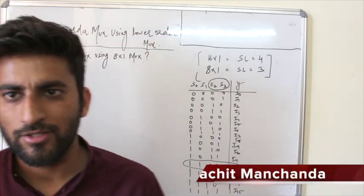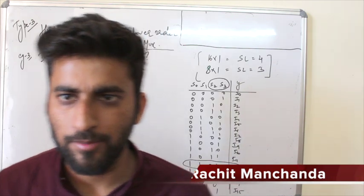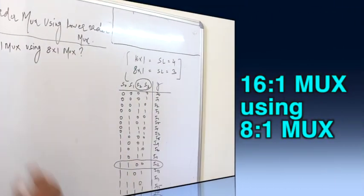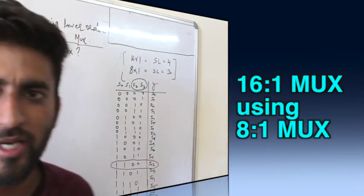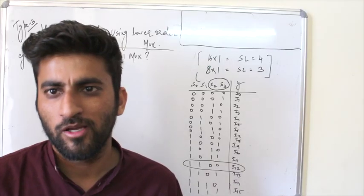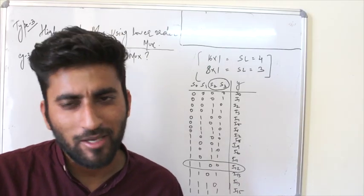So, we are covering our last example in this type where we design 16-to-1 mux using 8-to-1 mux. It's very simple. Just follow the procedure. How do we take select lines? We have to start.